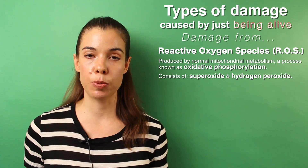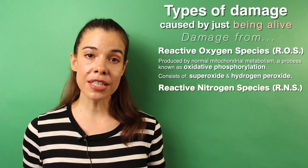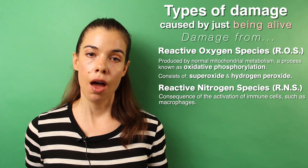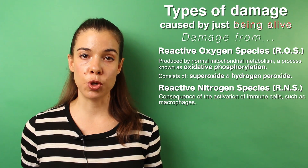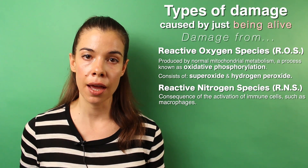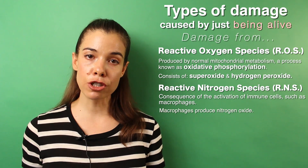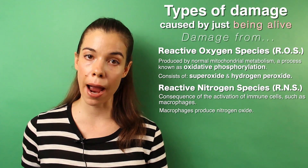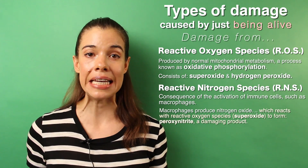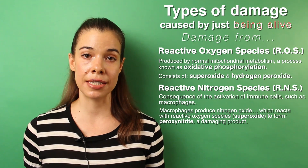The second type of damage produced in our bodies is called reactive nitrogen species. These are produced from immune cell activation, such as macrophages, which are activated in response to inflammatory cytokines produced during a bacterial infection. These macrophages produce nitric oxide, which reacts with superoxide — a byproduct of mitochondrial metabolism — to produce something called peroxynitrite, a very potent reactive nitrogen species that damages the cell.